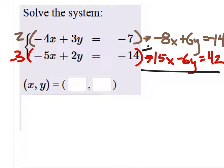Now when I add the columns, we eliminate the y's, because 6y plus negative 6y is 0. And I've got negative 8x plus 15x, that would give me 7x. That would equal negative 14 plus 42, which is 28.